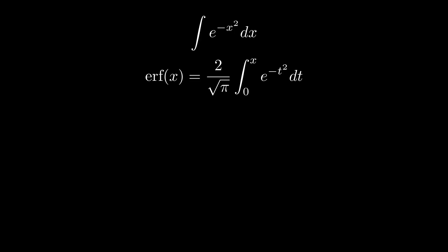That's what makes our function so special. To work with it, we mathematicians define the error function erf of x as 2 over square root of pi times the integral from 0 to x of e to the negative t squared dt.